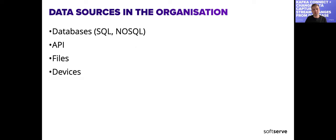Why are we building data pipelines and data platforms? Imagine we have an organization with multiple systems — like HR, a sales system, or an ERP. As business owners, we want to know everything about our business. The problem is that with many systems, it's very difficult to take data from one and another and join them to see the whole picture. We need to take data from all our source systems and put it in one place — one version of the truth.